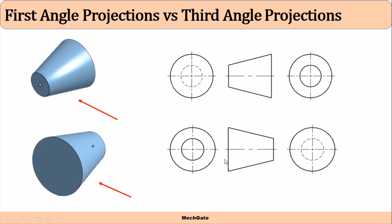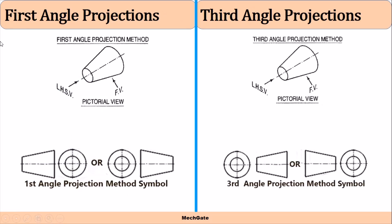This is the pictorial view of the frustum of a cone — this is the front view, and observing from the left-hand side gives the left-hand side view. In third angle projection, this is our front view and this is our left-hand side view. In third angle projection, the left-hand side view should be drawn on the left side of the front view. So from this side we see the smaller circle and then the bigger circle, and both circles are drawn on the left side of the front view. That is how we derive the symbol of third angle projection.